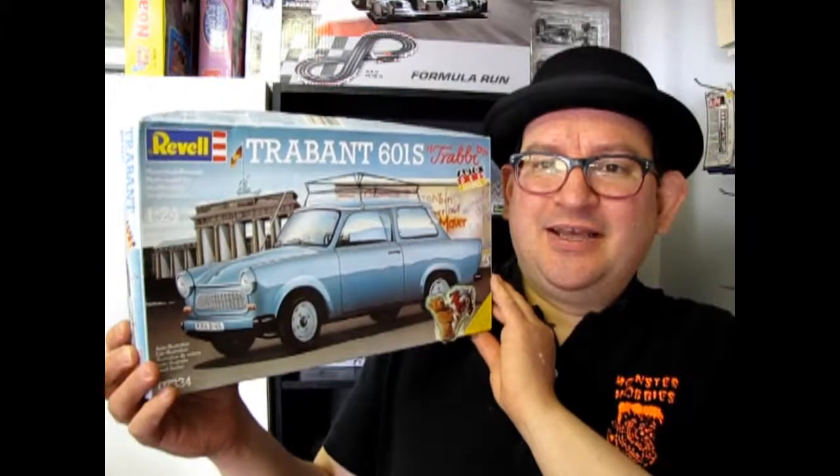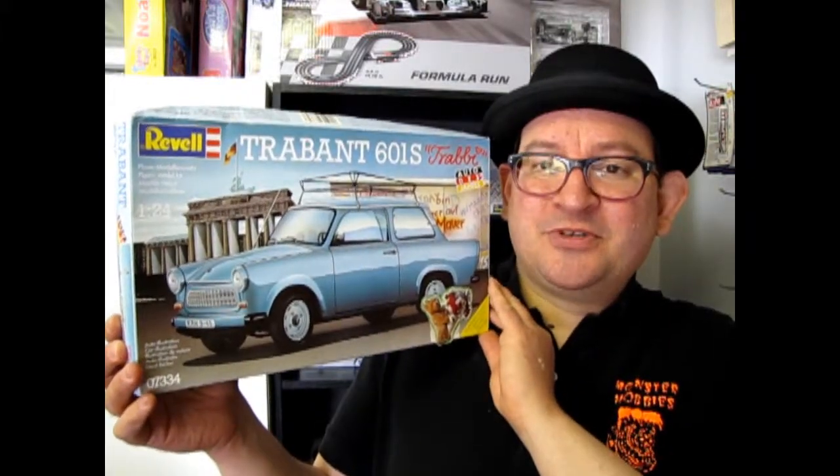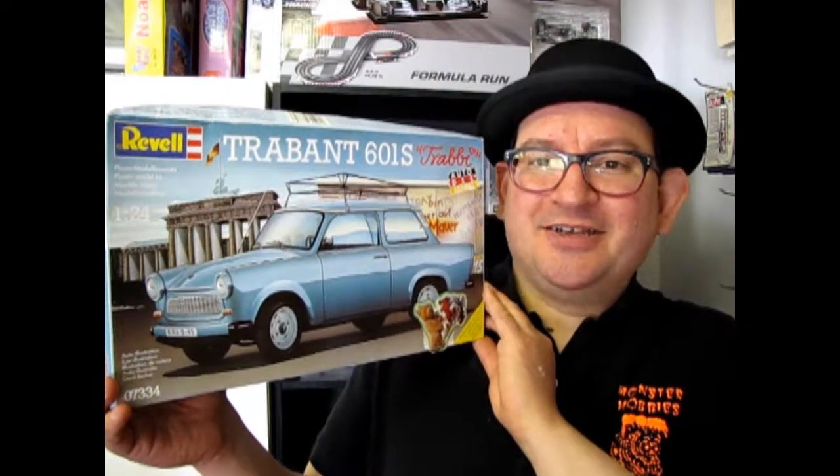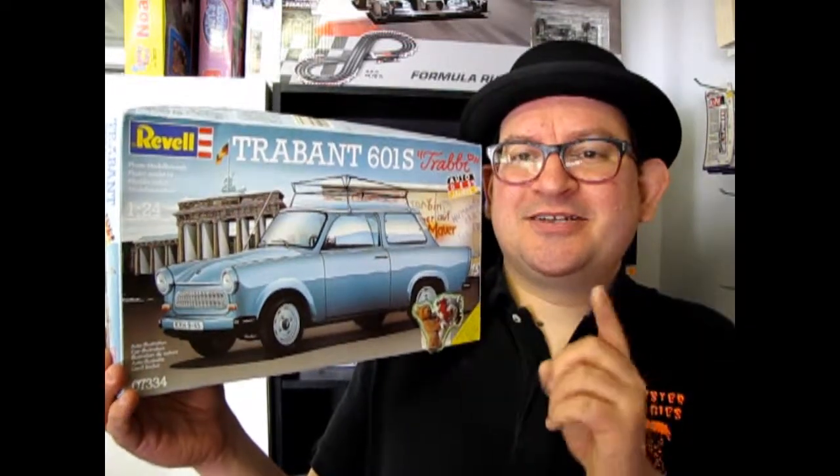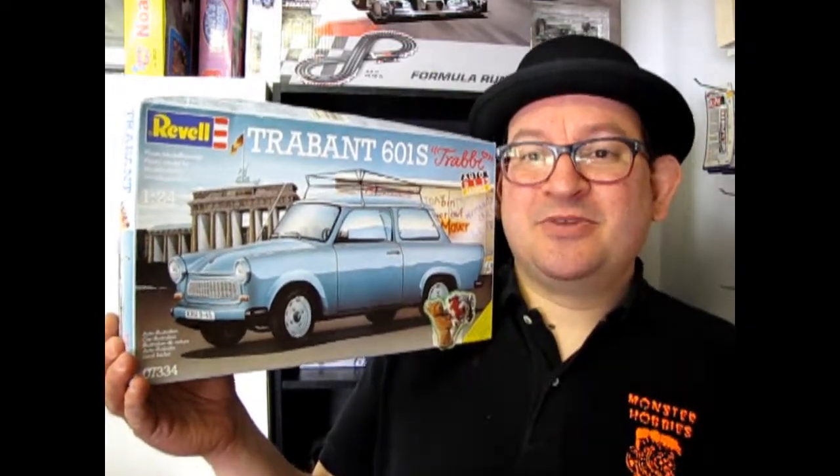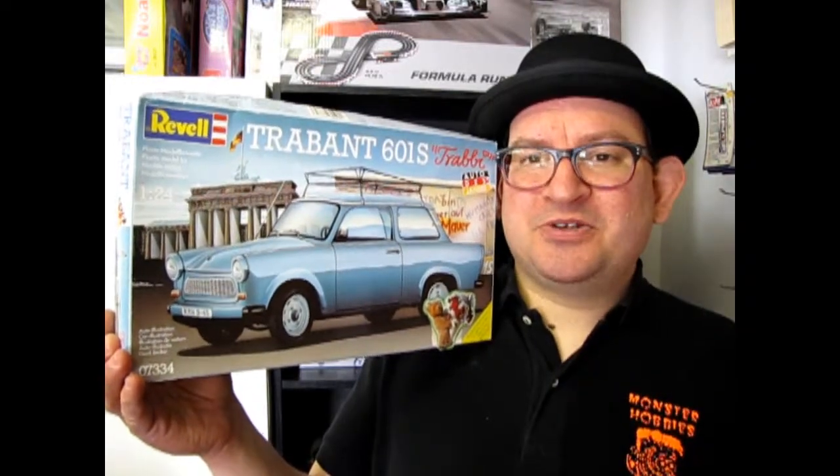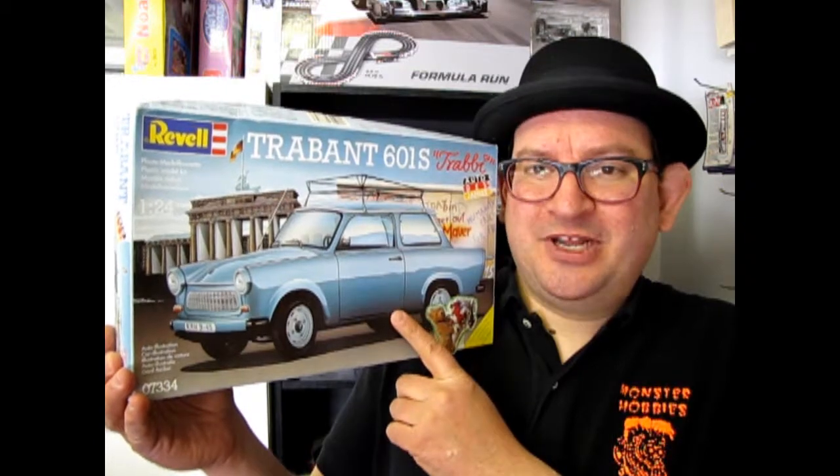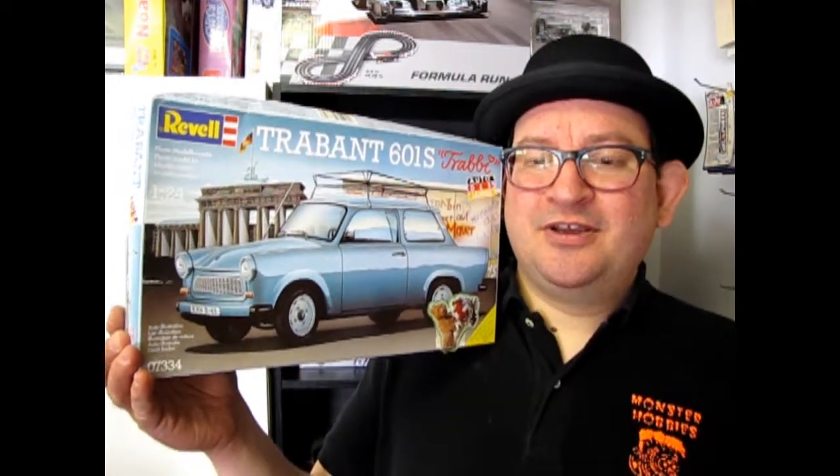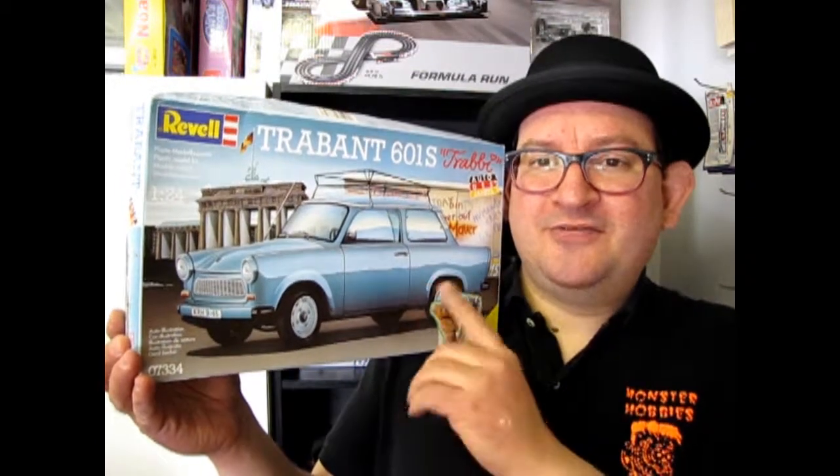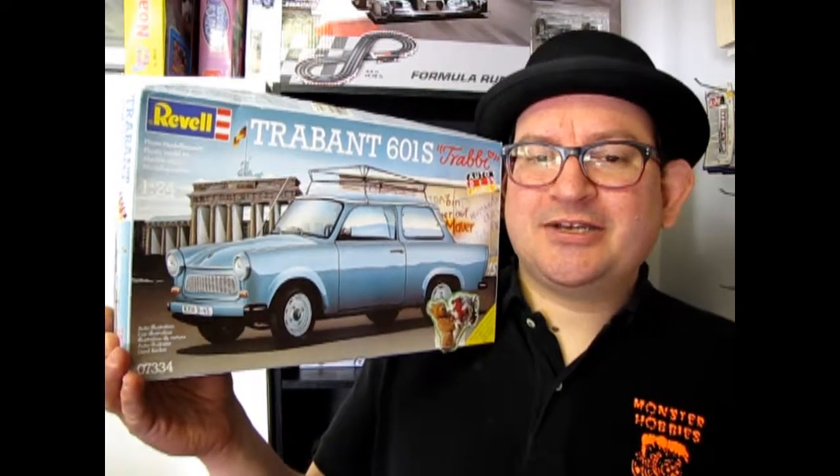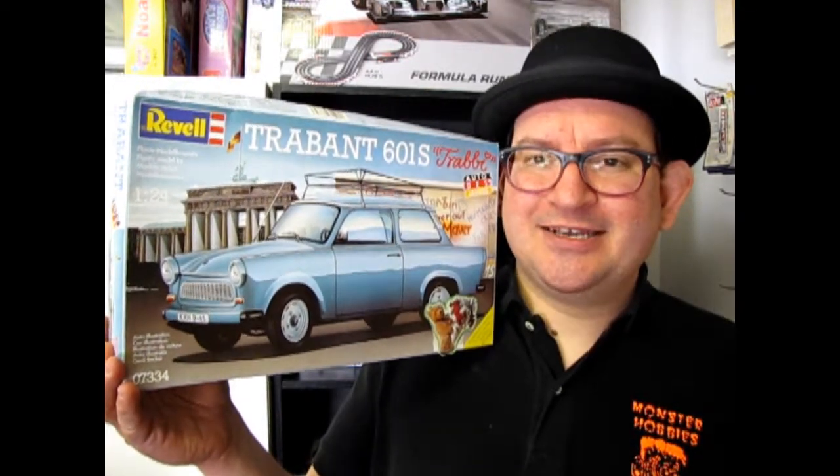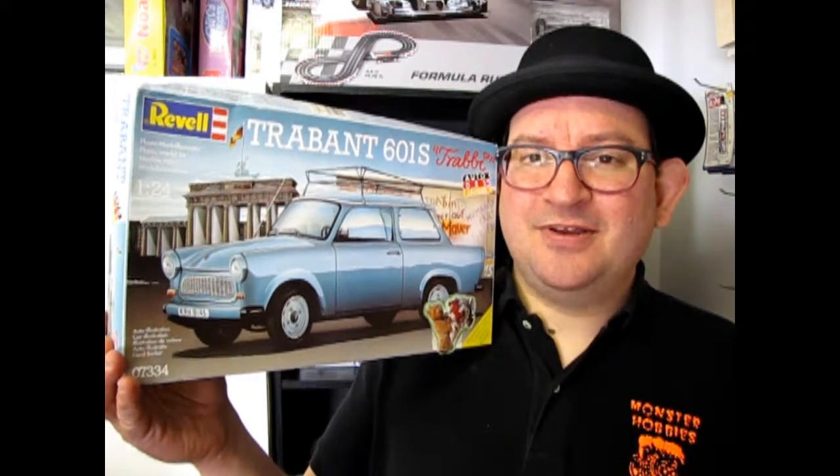Well tonight I get to open up the lid on Revell Monogram's Trabant 601S by Revell Germany actually. And this car is one of my personal collections. But this one is very special because the real car in East Germany in the age of the Communists, this is 1958. The real car was actually made out of paper mache and fiberglass, which is quite an amazing feat.